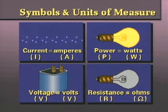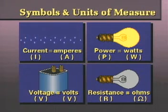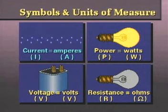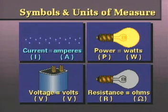Once again, the symbols, units of measure, and abbreviations for the four concepts are as follows. Current is represented by the letter I. The unit of measure for current is the ampere, or amp for short, and it is abbreviated A.